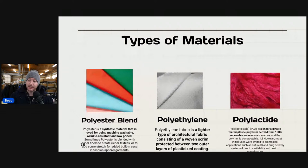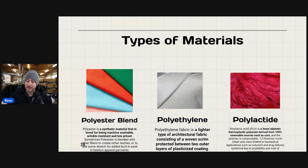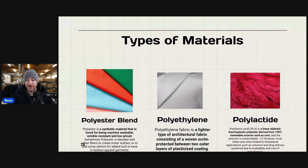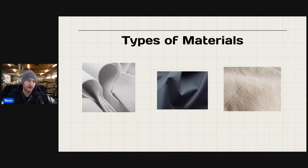Polylactide is a linear, aliphatic thermoplastic polyester derived from 100% renewable sources such as corn, and the polymer is compostable. Most initial uses were limited to biomedical applications like sutures and drug delivery systems due to availability and cost. It is in the item specifics drop-down menu, but I have yet to ever check it as a material type — it's just more rare and I'm not seeing it in the types of clothing I pick up.